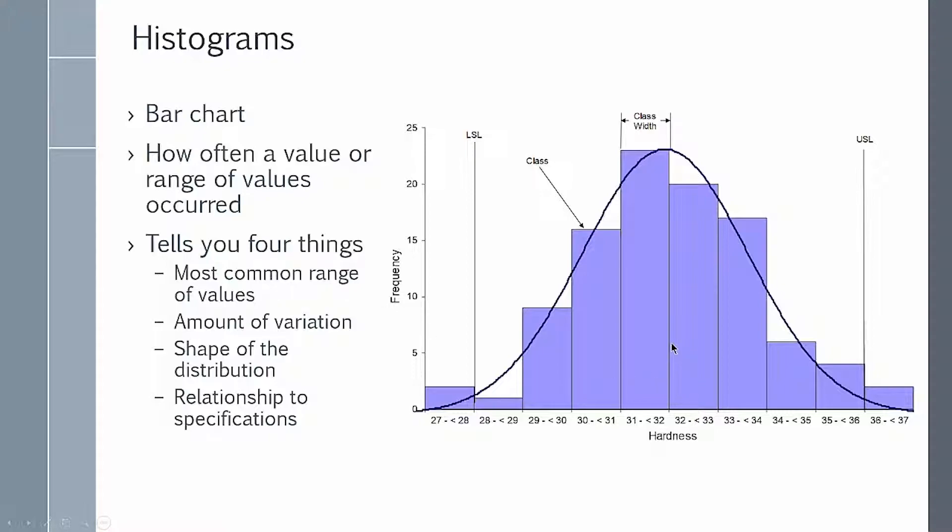It tells you the most common range of values. Here's an example of hardness and the highest peak is the most common, that's 31 to 32. It tells you the amount of variation. You can see it varies from about 27 up to 37.